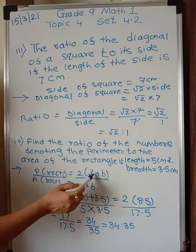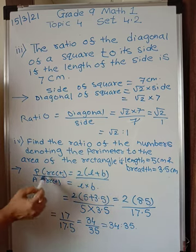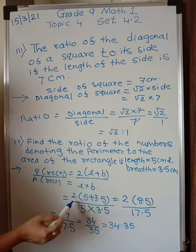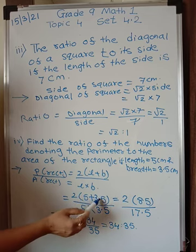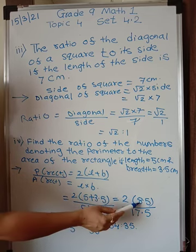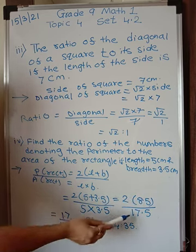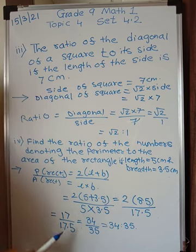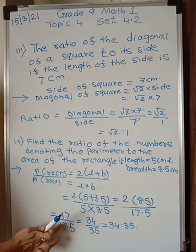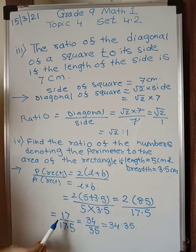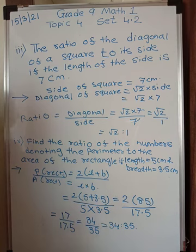They have already given length and breadth. Ratio of perimeter is to area. Perimeter of rectangle we know is 2 into L plus B divided upon area is length into breadth. So substitute 5 for length and 3.5 for breadth. You get 2 into 5 plus 3.5. 5 plus 3.5 is 8.5. 2 into 8.5 becomes 17. And here 5 into 3.5 becomes 17.5. So your ratio is 17 is to 17.5. If you want to remove this point, you can multiply by 2. So you get 34 upon 35. So either you write 17 is to 17.5 or you can write 34 is to 35.